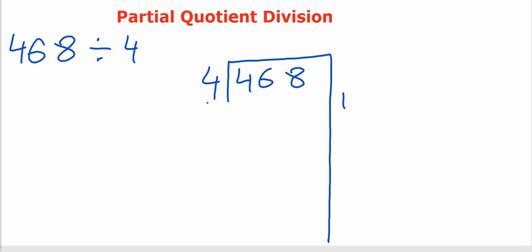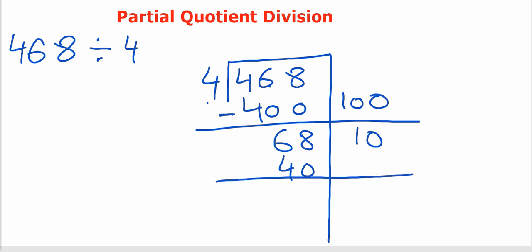So first of all, 4, 100 times is 400. Then subtract it. 8 minus 0 is 8, 6 minus 0 is 6. Then 4, 10 times is 40. We have to use very easy multiples of 4. 8 minus 0 is 8, 6 minus 4 is 2. Where 28 comes in the table of 4? It is 7 times. 7 times 4 is 28. What is left with us? Nothing.